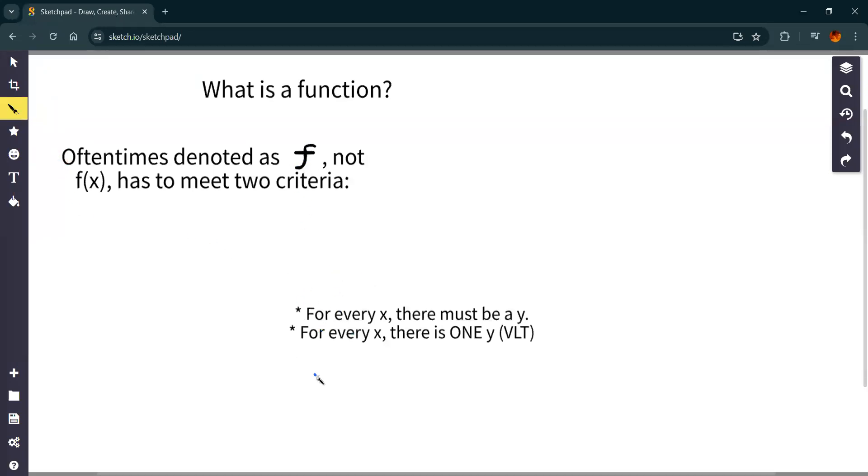There are two rules that are very simple. And of course, people can write them out in complicated ways, but this is really what they mean. And essentially, they kind of could be considered one rule. But for every x, there must be a y, so there can't be no y's. And the other one is for an x, there can be one. So really, it's just saying there needs to be only one y for every x, not more, not less.